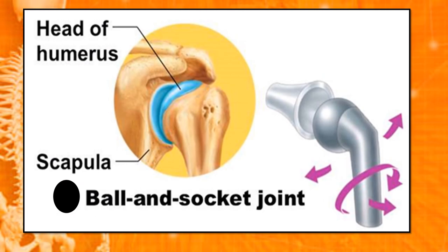First is the ball and socket joint. They are the most movable joints of the body. You can move these joints round and round. In this kind of joint, one end of a bone is like a ball, which fits into a socket of the other bone. The shoulder joint and hip joint are the best examples of the ball and socket joint.